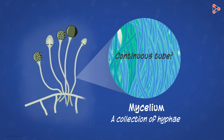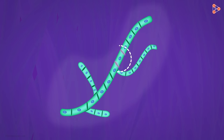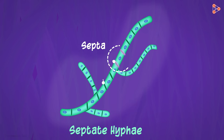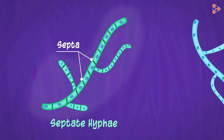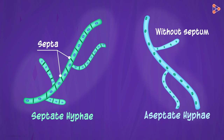Now, are these hyphae made up of one continuous tube, or are they made up of smaller sections? Some fungi have hyphae that have partitions. These partitions are called the septa, or singular septum. So such types of hyphae are called septate hyphae. On the other hand, in many fungi you find no partitions in the hyphae — these are called aseptate hyphae. Another name for such type is cenocytic hyphae.